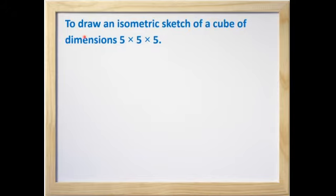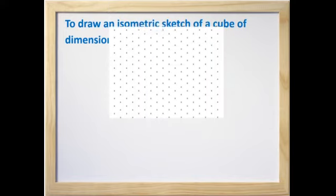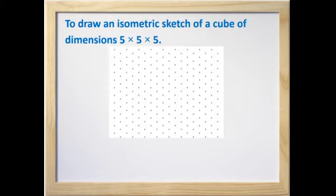Today, we are going to draw an isometric sketch of a cube of dimensions 5 x 5 x 5. See, now we are having a dot paper. In this, we are going to draw a cube of 5 x 5 x 5.